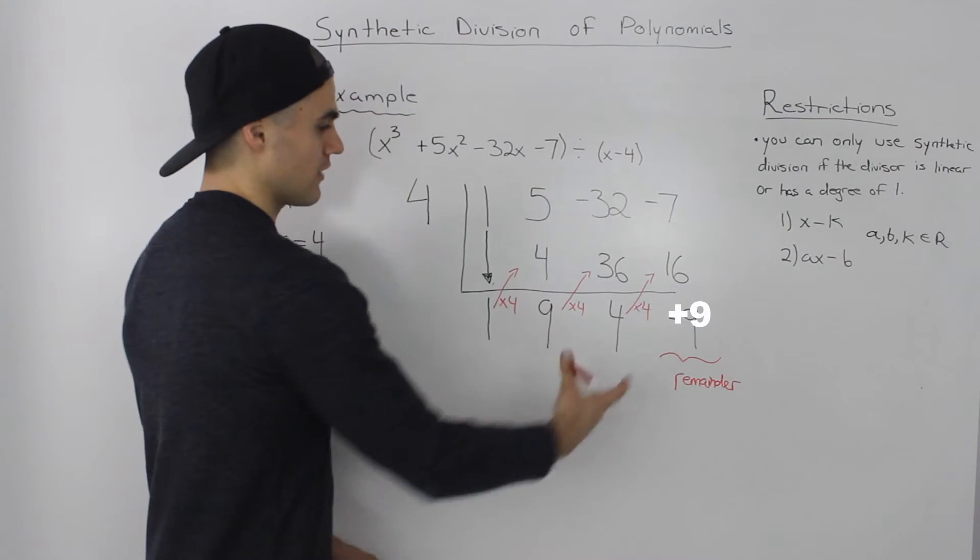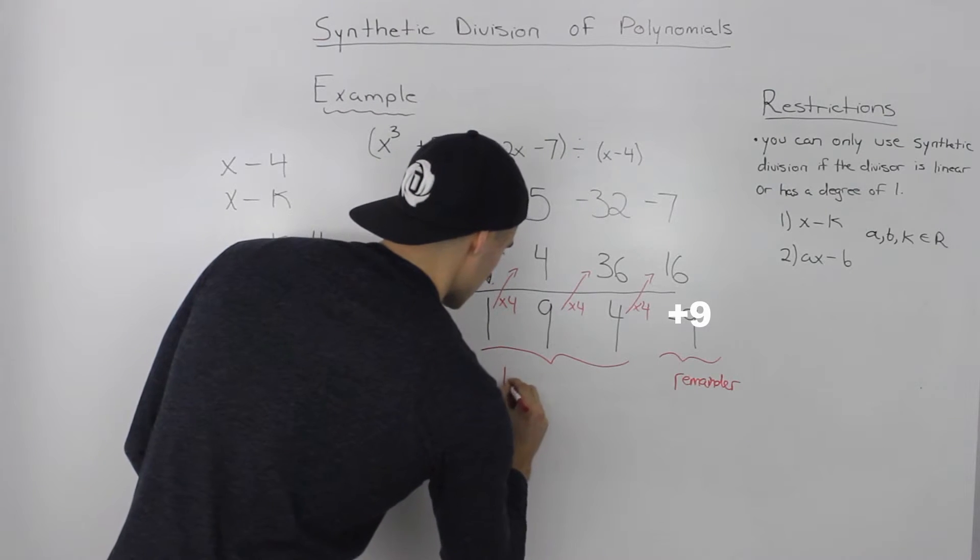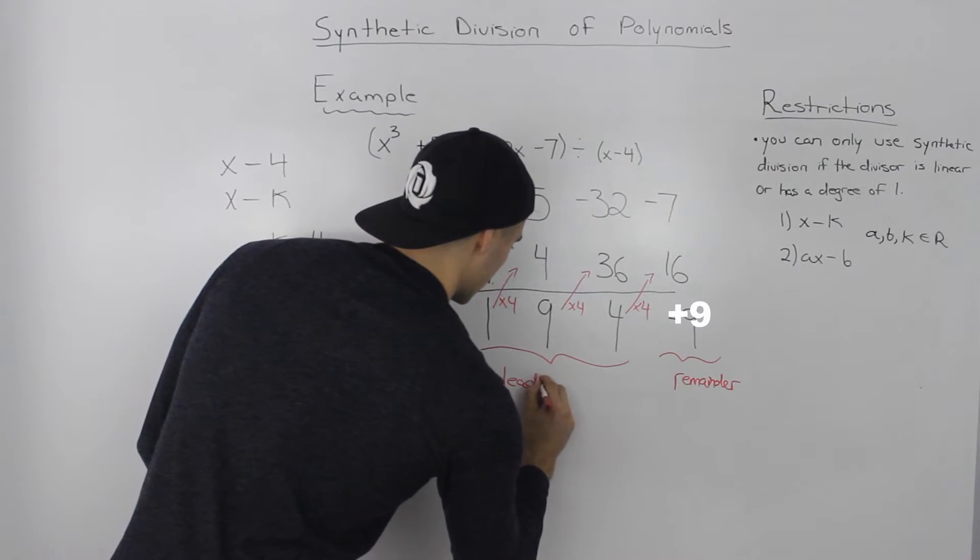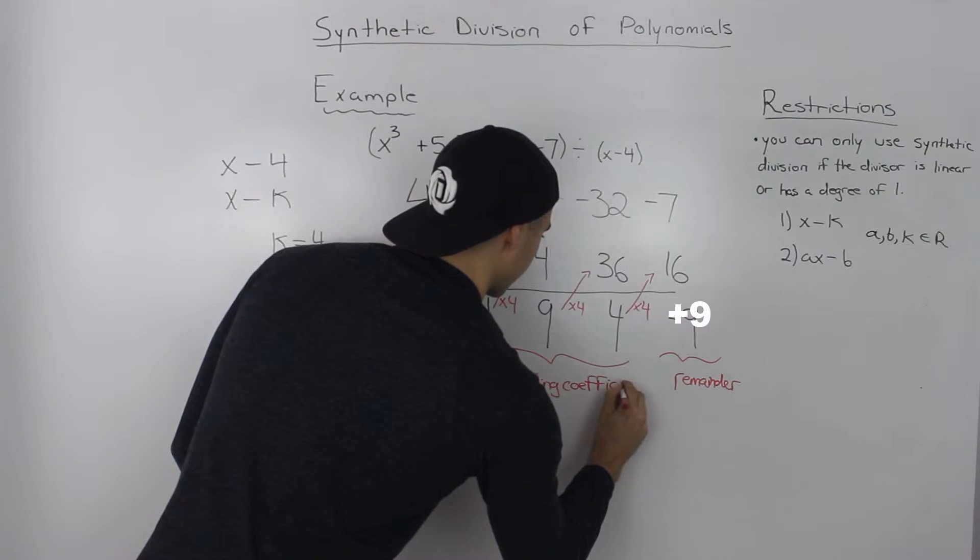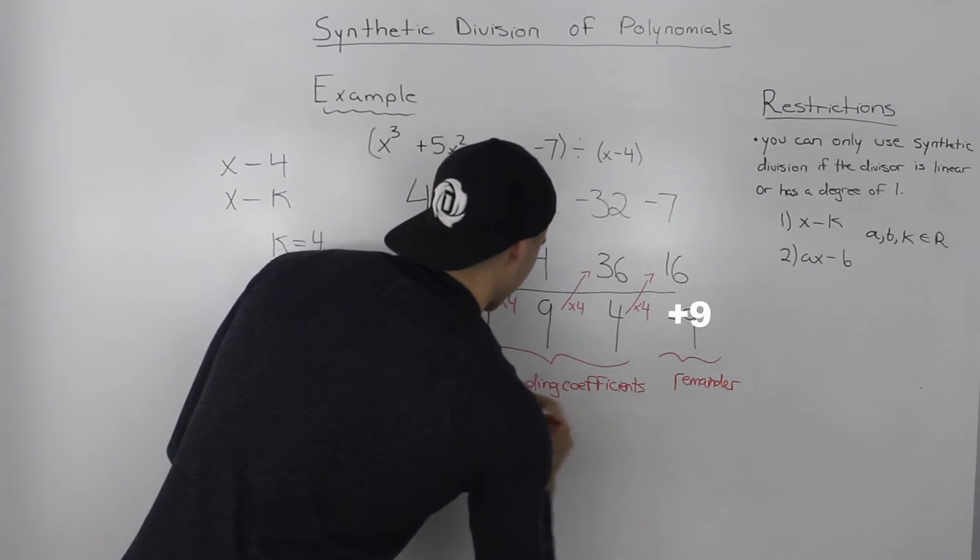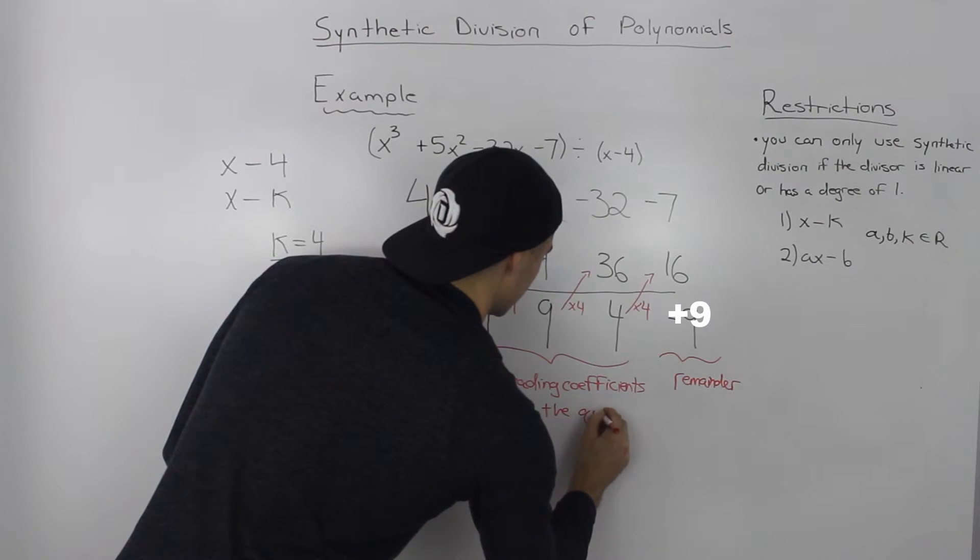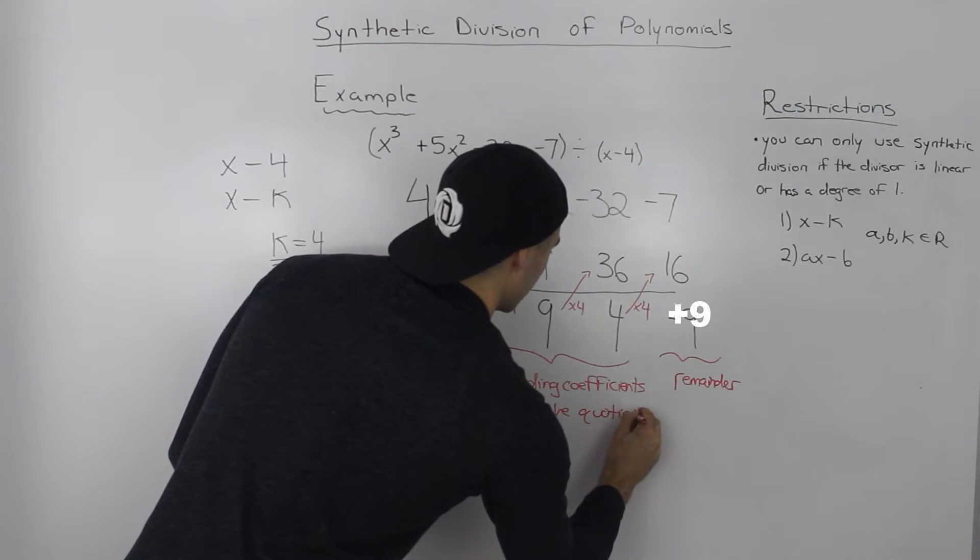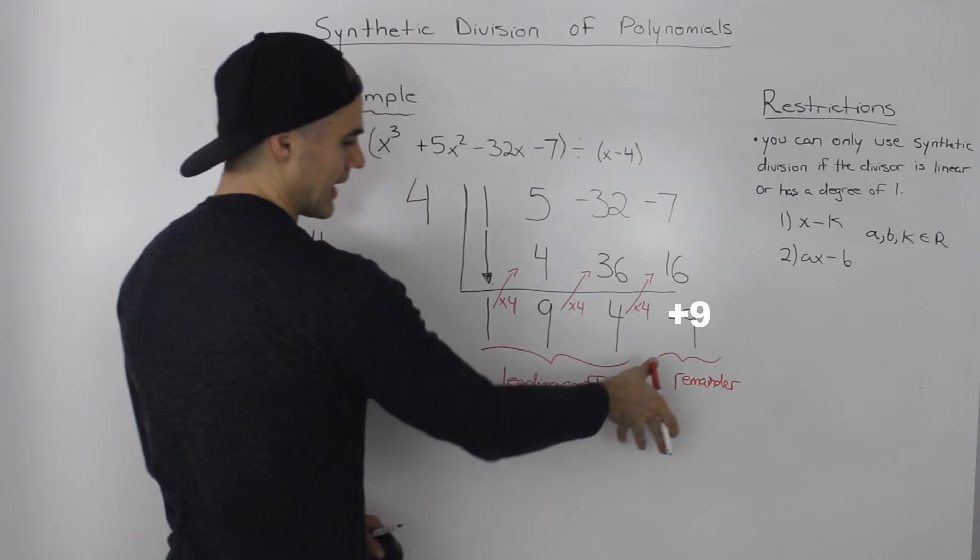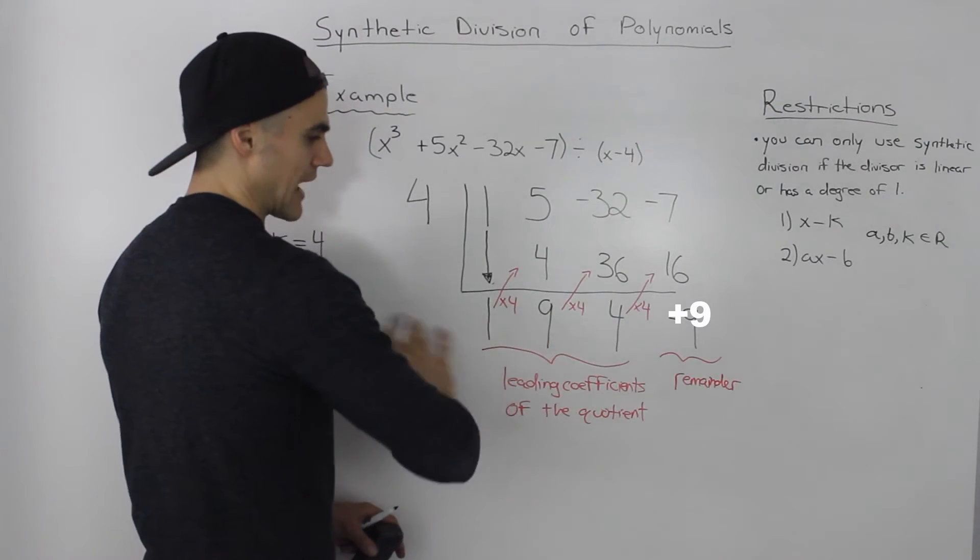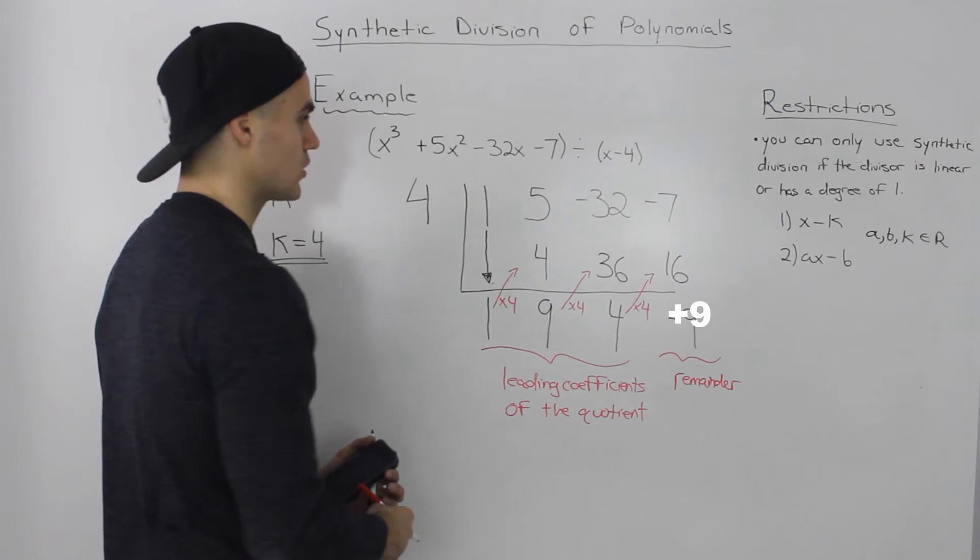Now, any numbers remaining, other than the remainder, these represent the leading coefficients of the quotient. So remember, in synthetic division, the remainder will always be a constant, and the remaining numbers, however many there are, represent the leading coefficients of the quotient.